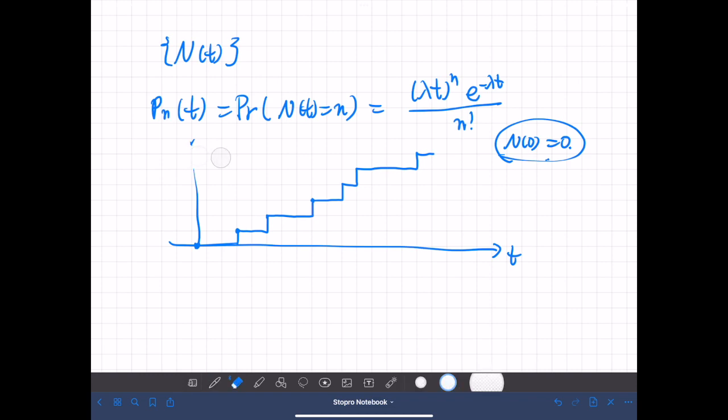Now, let's say this is n. And let's say the time when this random variable n of t reaches n is tn. So this is a random variable, a continuous random variable. So this is t1, this is t2, this is t3, and so on. Now next we consider the intervals.